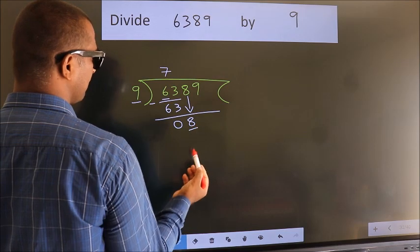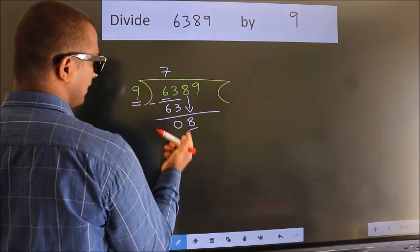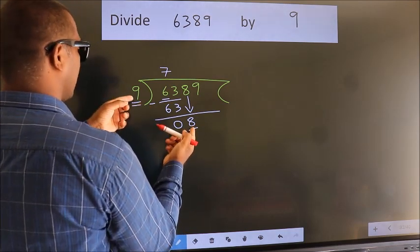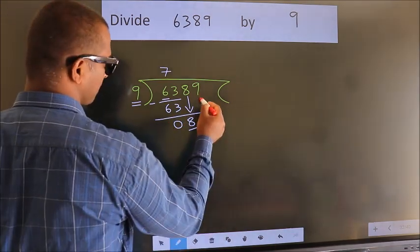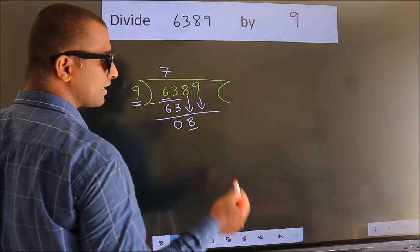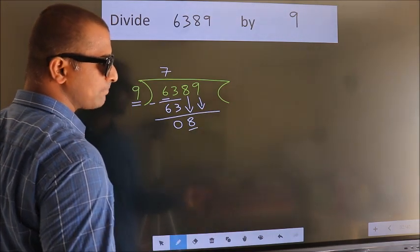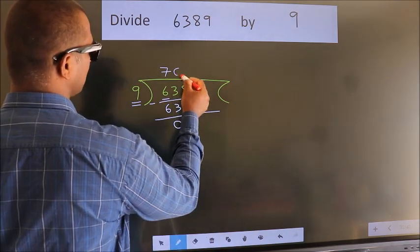Here we have 8, here 9. 8 smaller than 9. So we should bring down the second number. And the rule to bring down second number is, put 0 here.